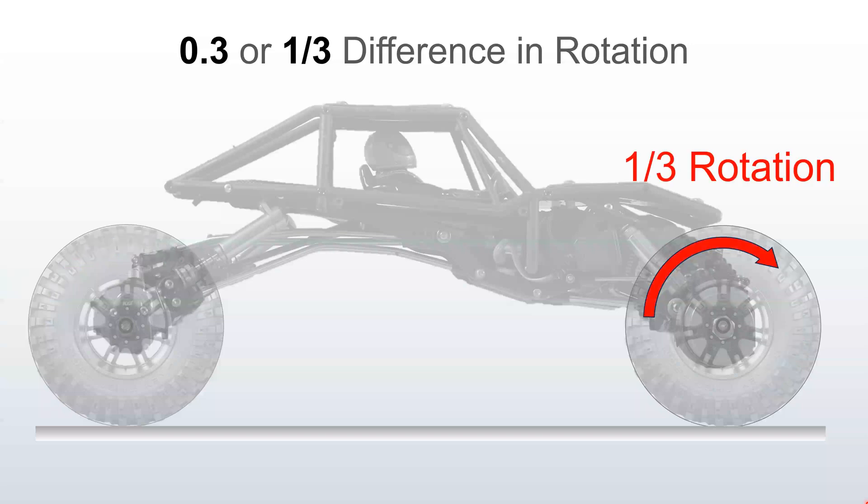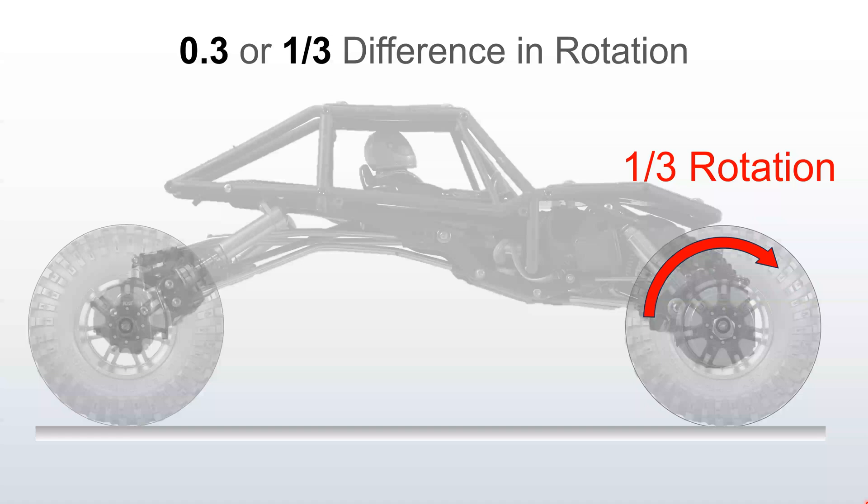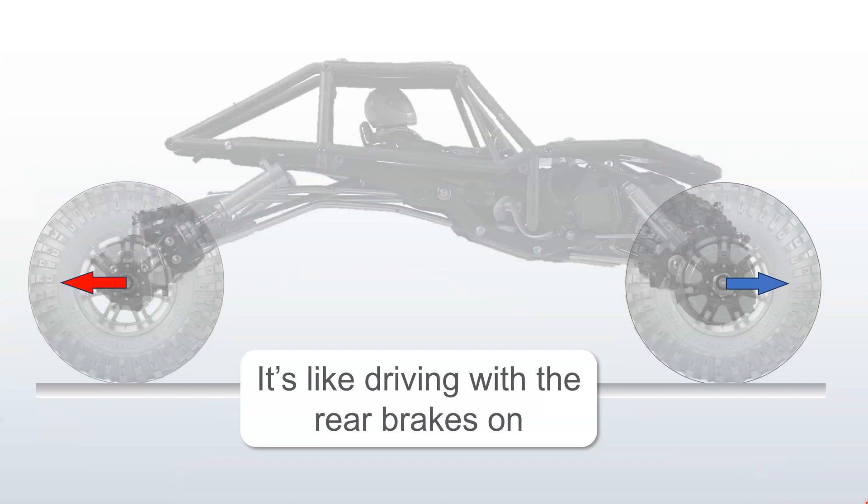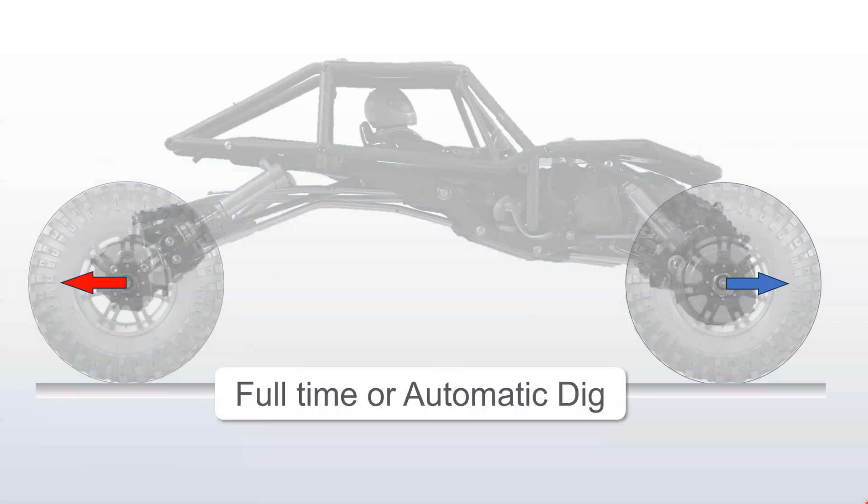To help visualize, you don't even have to be rolling forward. You can assume the back wheel is stopped, and the front wheel still wants to rotate one third of a rotation. Take it one step further, you can assume that the back wheel wants to rotate backwards one sixth of a rotation, and the front wants to rotate forward one sixth of a rotation. That'll help you understand how the two wheels work against each other. It's like driving with the rear brakes on, or it's like full-time or automatic dig if you know what dig is, except that you don't have any control over turning the dig on and off.